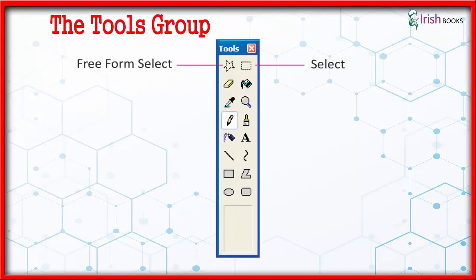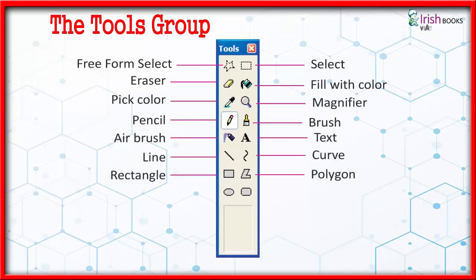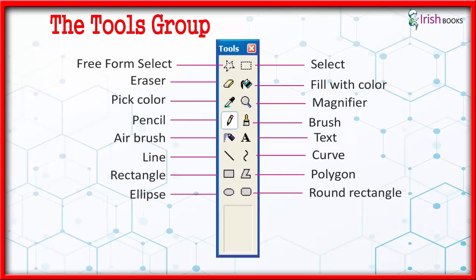The Tools Group includes the following tools: Free Form Select, Eraser, Pick Color, Pencil, Airbrush, Line, Rectangle, Ellipse, Select, Fill With Color, Magnifier, Brush, Text, Curve, Polygon, and Round Rectangle.